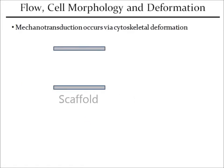The attachment type becomes important when flow perfusion is applied to the cell-seeded scaffold. Flow perfusion creates shear stresses in the scaffold that are sensed by the cells. Translation of these physical forces to a biological signal is termed mechanotransduction, where cytoskeletal deformation is one of the primary mechanisms.